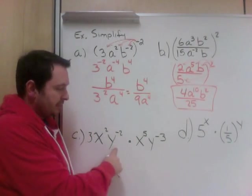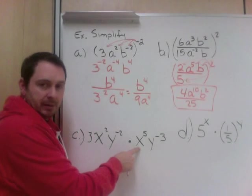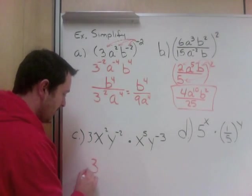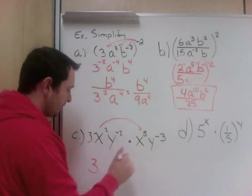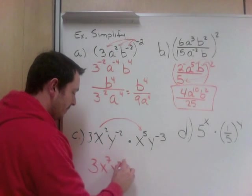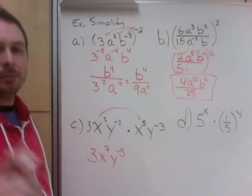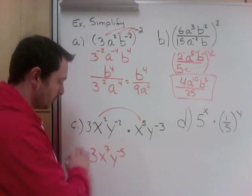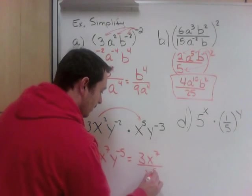Next one: 3x squared y to the negative 2 times x to the 5th y to the negative 3. There are things with the same base. When we multiply, we add: 3 stays as 3. x squared times x to the 5th — add exponents: 2 plus 5 is 7, giving x to the 7th. y to the negative 2 times y to the negative 3 — add: negative 2 plus negative 3 is negative 5. We do not want negative exponents in the final answer, so y to the negative 5 flips to the denominator, giving 3x to the 7th over y to the 5th.